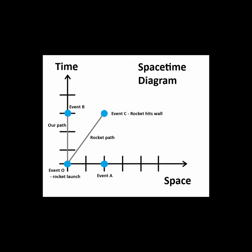We can also say that event A is just a point in spacetime to represent the position of the wall at the time we launch the rocket. We can also say that event B is the point in spacetime when we see the rocket hit the wall.